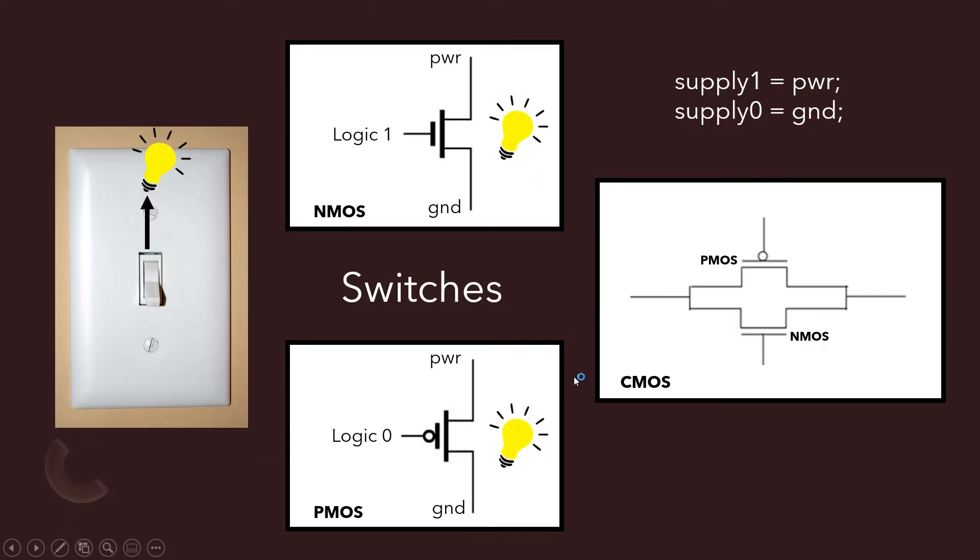So you think of NMOS, PMOS, and CMOS. CMOS stands for complementary metal oxide semiconductor, and it's made up of two different types. So you have the PMOS and the NMOS. You can think of the PMOS like a PNP transistor. It's turned on with a zero, and an NMOS is like an NPN transistor. It's turned on with a one.